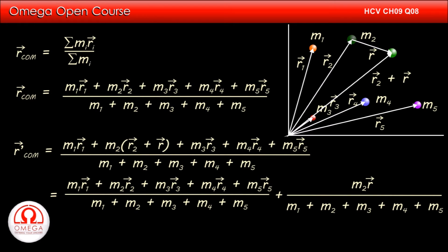But the first term in this expression is the original position of center of mass. Thus new position of center of mass is original position of center of mass plus m2 vector r divided by total mass of the system.